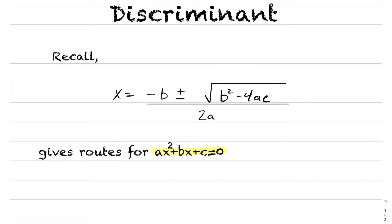Inside of the quadratic formula, there is a very special characteristic, and that is located underneath the square root sign. If you notice, we have b² minus 4ac. This expression is known as your discriminant.